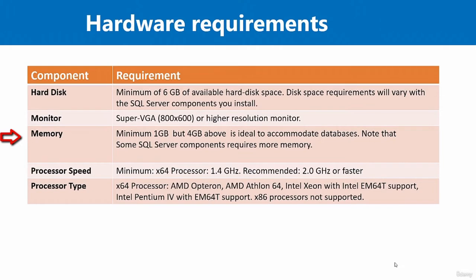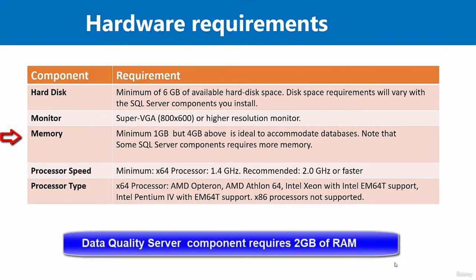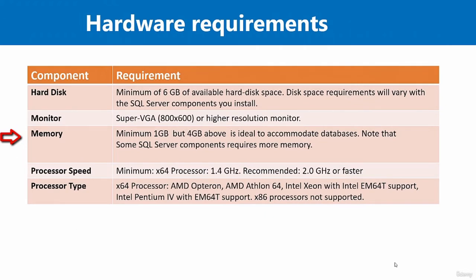The recommended processor speed is 1.4 GHz on a 64-bit processor; however, 2.0 GHz or faster is recommended. The key thing to note regarding the processor type is that SQL Server only supports 64-bit processors — it no longer supports 32-bit processors.